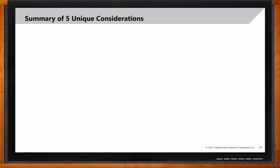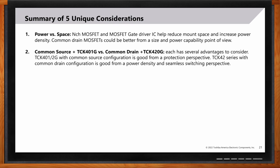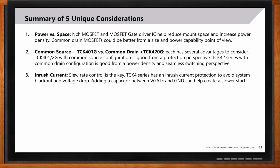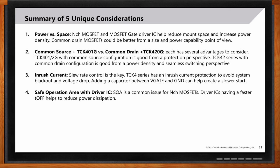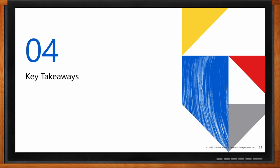To summarize the design considerations: we covered the trade-off between power density and board space, recommending N-channel or common drain MOSFETs for most power density and seamless switching, and common source when protection is more critical. We discussed inrush current control, wide SOA due to slow turn-on and fast turn-off, and their role in design. We also covered break-before-make versus make-before-break depending on application requirements. The TCK4 series addresses all of these challenges.